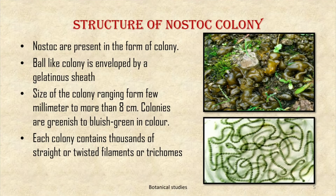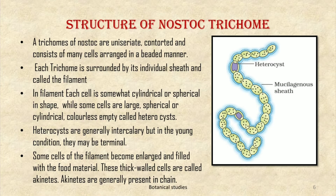Regarding the structure of the Nostoc colony: Nostoc are present in the form of ball-like colonies developed by a gelatinous sheath. The size of the colony ranges from a few millimeters to more than eight centimeters. Colonies are greenish to bluish-green in color. Each colony contains thousands of straight or twisted filaments or trichomes.